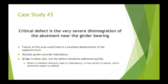The critical defect is the very severe disintegration of the abutment near the girder bearing. Failure to this area could lead to localized displacement of the superstructure. However, I wouldn't say it would affect the overall stability like the last example, mostly because we have a multiple girder system here that provides redundancy. The bridge is probably still safe, but the defect should be addressed somewhat quickly. The defect is medium relevancy due to the redundancy, very severe in nature, and I would assign medium urgency.